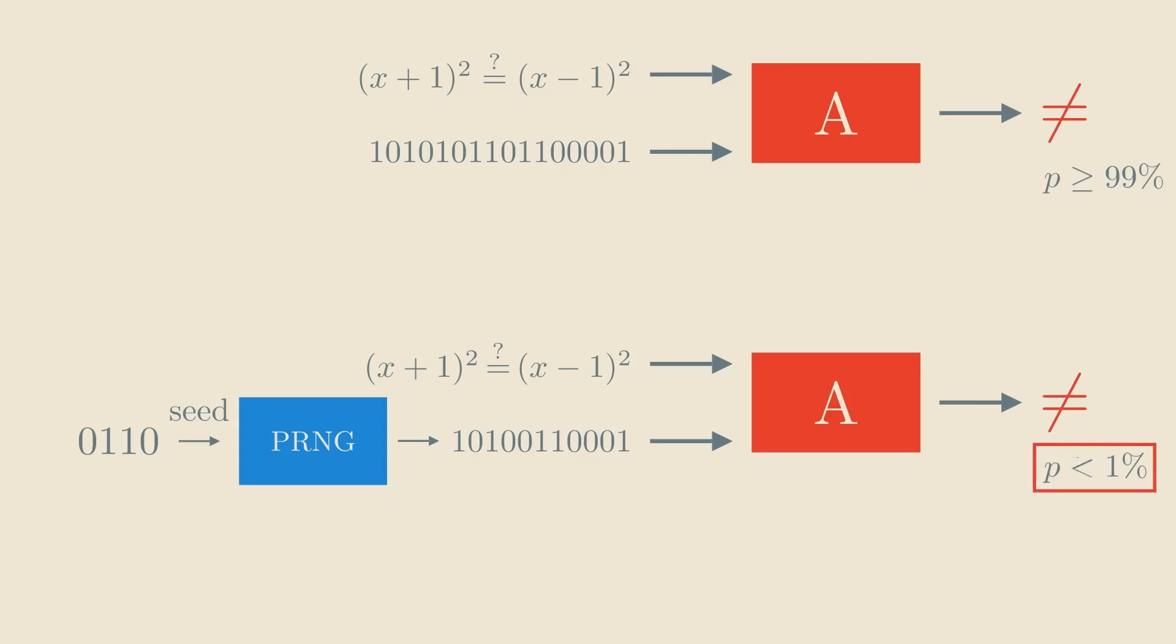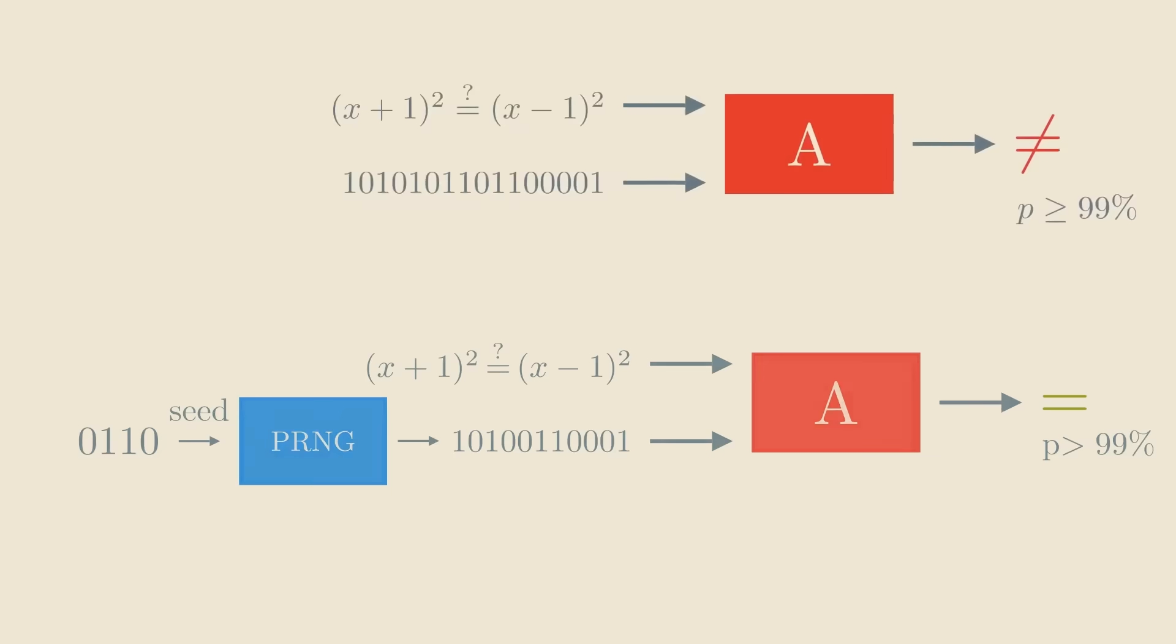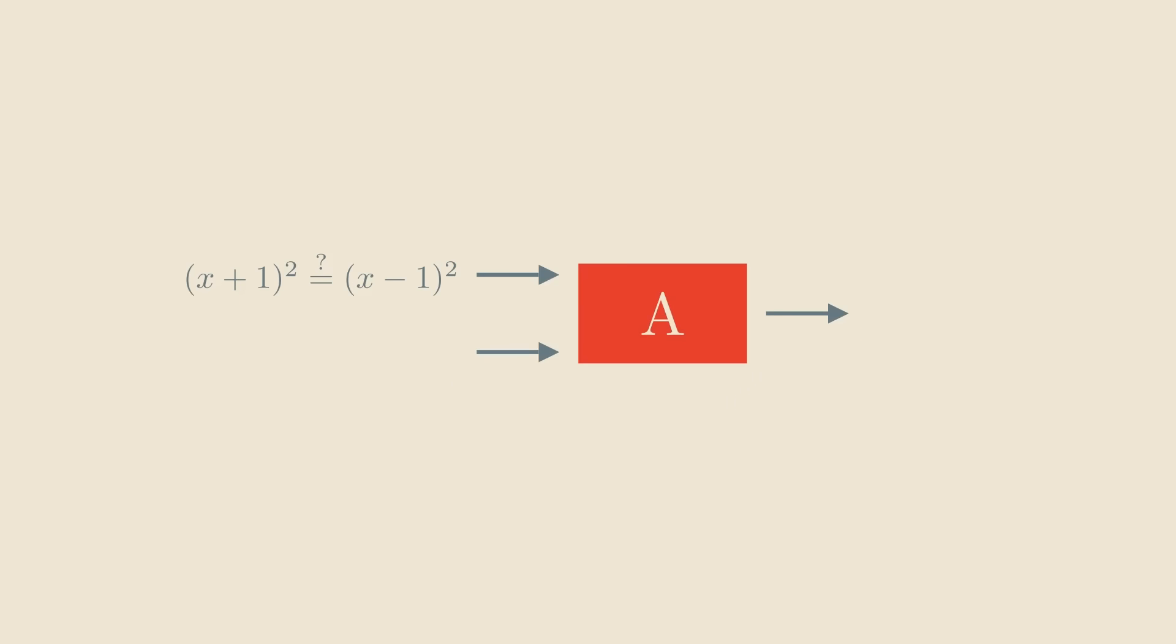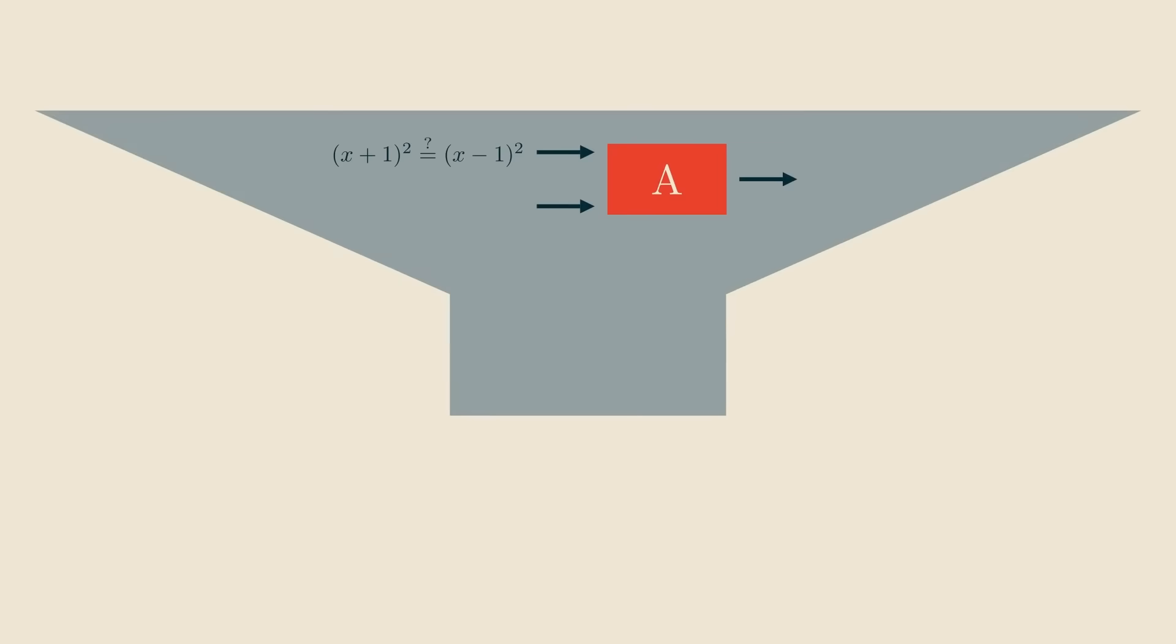Assume for a contradiction that there is some concrete input where A with pseudorandom bits is correct with less than 1% probability. In other words, it incorrectly classifies the two expressions as being the same, with more than 99% probability. If this happens, we can turn our algorithm into a statistical test.